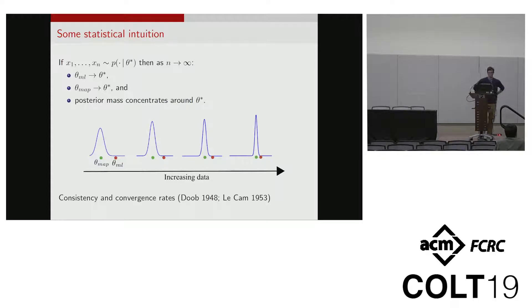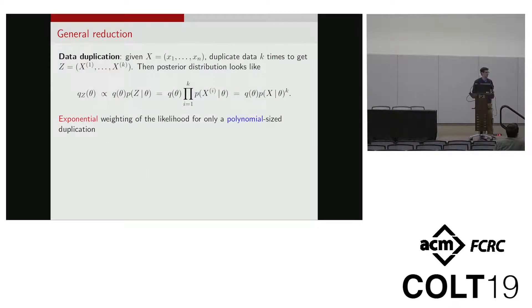But in our case we're interested in computational hardness, and so our problems definitely aren't IID. We can't use this directly, but it turns out that we can actually achieve a very similar effect. The general reduction that we look at is this idea of data duplication. You just give me a dataset and I duplicate the data a whole bunch of times, and lo and behold, most of the weight is going to be on that likelihood function. We get this exponential weighting for only a polynomial-sized duplication.